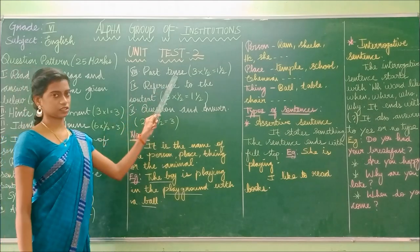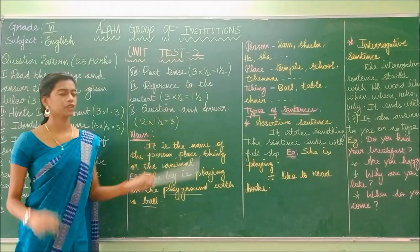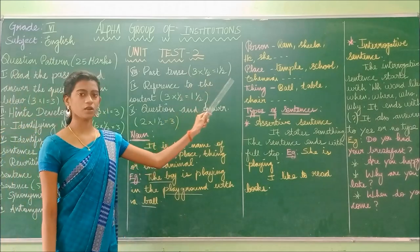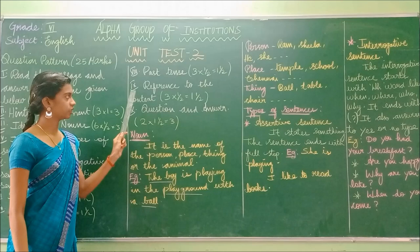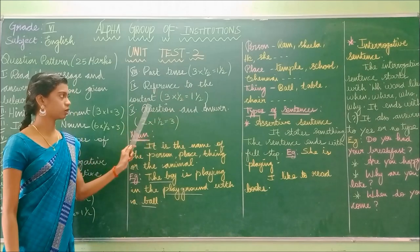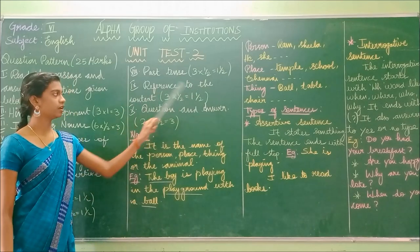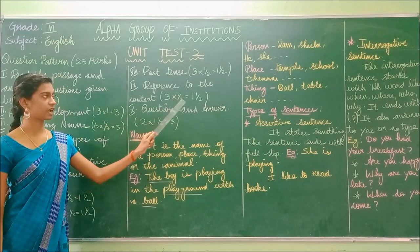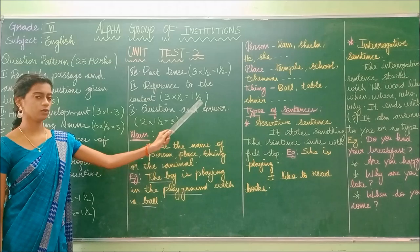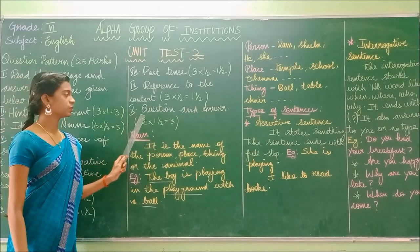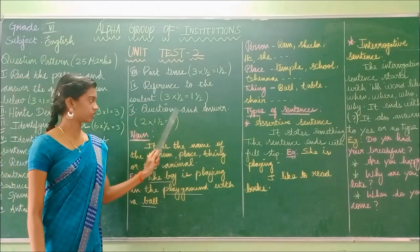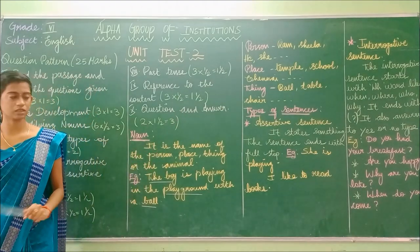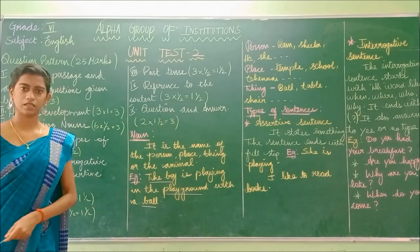The eighth section is past tense — there will be 3 questions, each carrying half a mark, for a total of 1 and a half marks. The ninth section is reference to context — there will be 3 questions, each carrying 1 mark, for a total of 3 marks. The last section is question and answer — there will be 2 questions, each carrying 1 and a half marks, for a total of 3 marks.